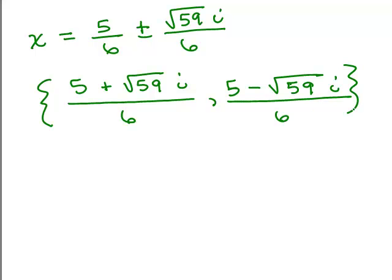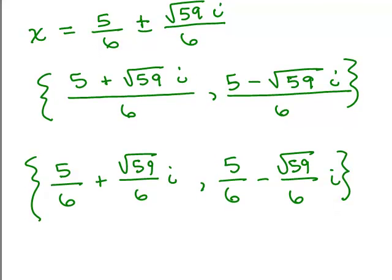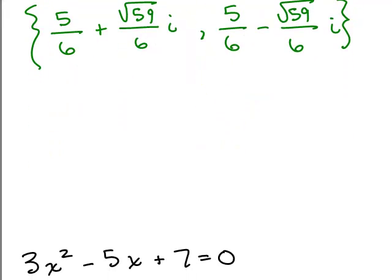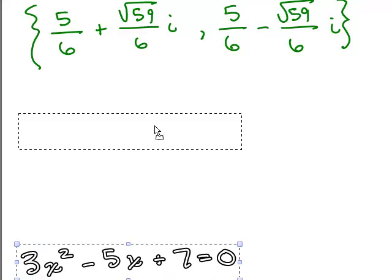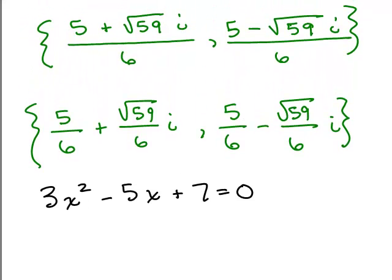Now, since these are complex numbers, sometimes they're written in the form a plus bi, so you could also write that as 5 sixths plus square root of 59 over 6i and 5 sixths minus square root of 59 over 6i. So there we go, so our original problem was 3x squared minus 5x plus 7 equals 0, and either way of these is a correct way of writing the solution, so we did that by completing the square.